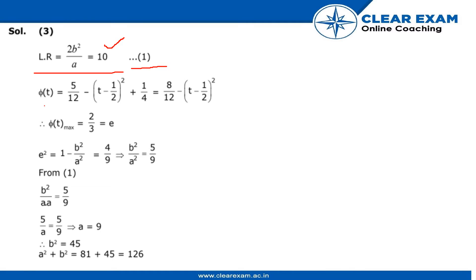Now the function for phi t is given. It is changed to this equation because we have added 1/4 to the equation and also subtracted 1